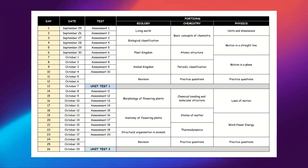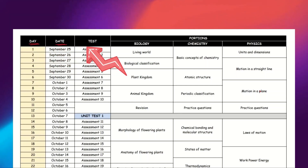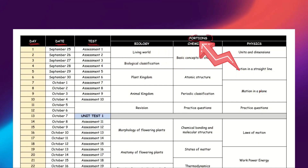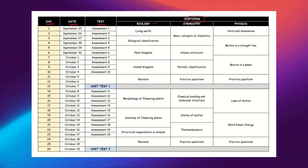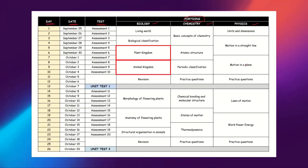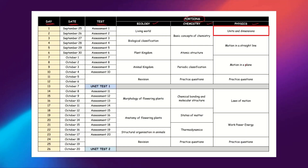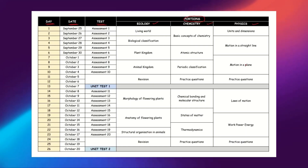Here is the NEET 2023 ultimate schedule. There are four columns: day, date, test name, and the portions to cover for that respective day. Every day you need to study portions of all three subjects. I have mentioned how many days to spend per chapter based on its difficulty — for example, two days for Living World, three days for Plant and Animal Kingdom in Biology, four days for Basic Concepts of Chemistry, three days for Atomic Structure and Periodic Classification, and in Physics two days for Units and Dimensions, four days for Motion in a Straight Line, and four days for Motion in a Plane.